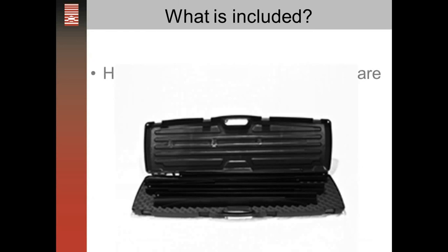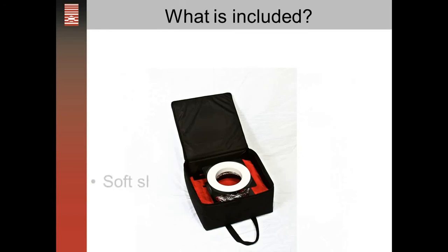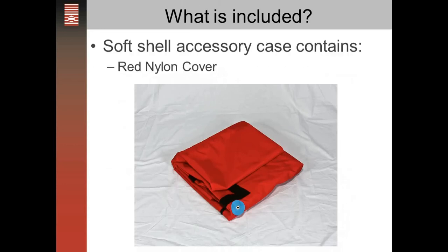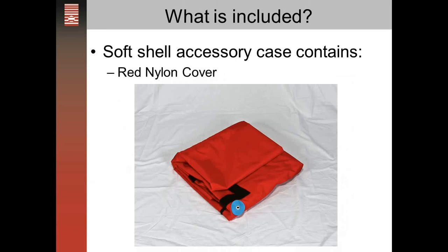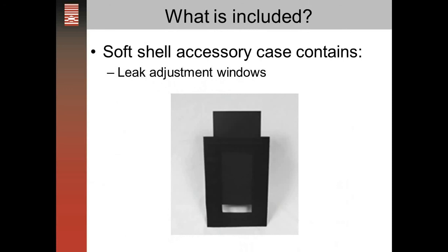What's included in the system: there's a hard shell case — like a double shotgun case — where the frame and hardware all fit, allowing you to easily carry and set up in your classroom. There's also a soft shell accessory case where everything else included in the system fits neatly, along with the manual. The system also includes a red nylon cover that creates the enclosure around the frame, and three leakage adjustment windows that allow you to adjust the leaks in the enclosure and in the ductwork.